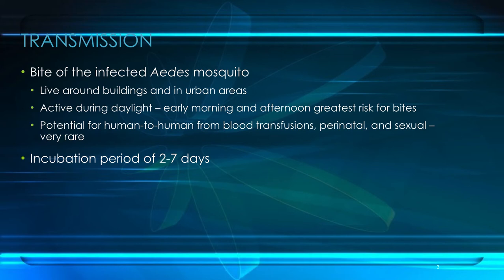The thing about Aedes mosquitoes is they're often going to live around buildings in urban areas, and they're usually going to be active during the daylight hours. Their peak biting activity — in other words, when they're most likely to take that viremic blood meal — is going to occur in the early mornings and then in the late afternoons. That obviously is going to play a role in prevention, which we'll talk about a little bit later.